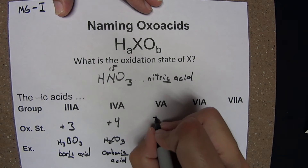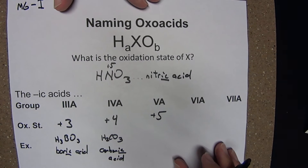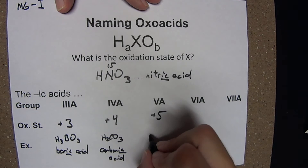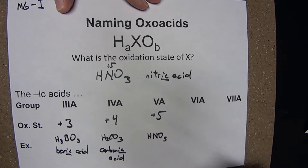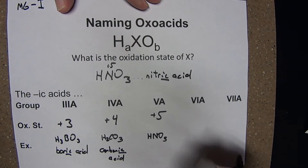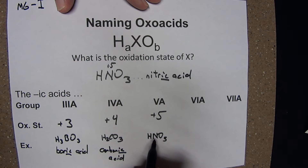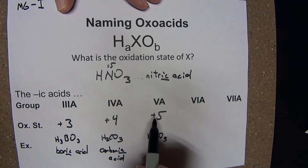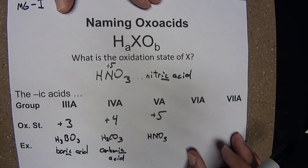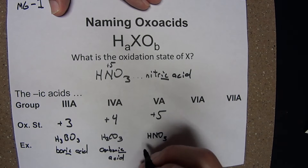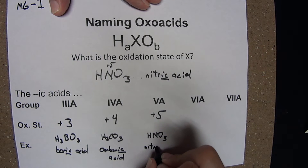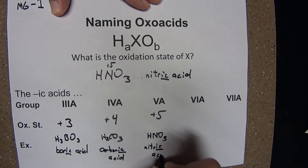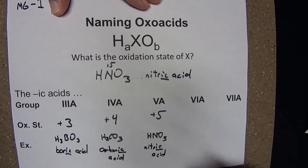For group 5, we just saw an example: HNO3. The oxidation state of that nitrogen, as we saw earlier, is plus 5. The ic acid for this particular group is plus 5. That made this nitric acid.